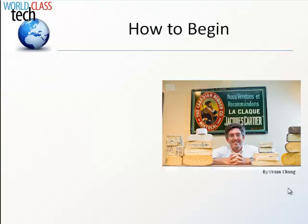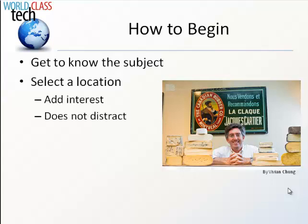So how do you begin to take a good environmental portrait? Here's another example — a man at work. First, get to know your subject: what are they interested in? Because the environment you place them in should reflect their interests and the things they like to do. Once you know that, select a location. Try to find one that's interesting and colorful. However, you have to be careful that your background and environment don't distract — it can't be too busy.